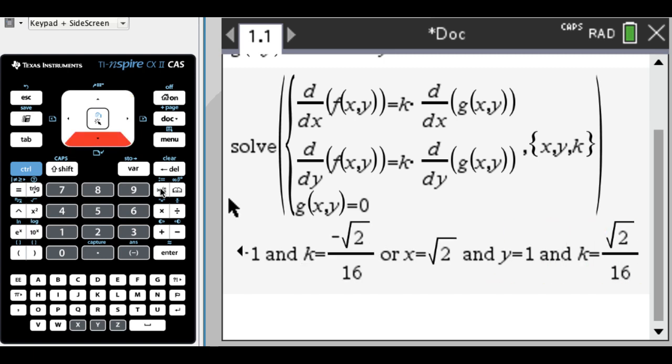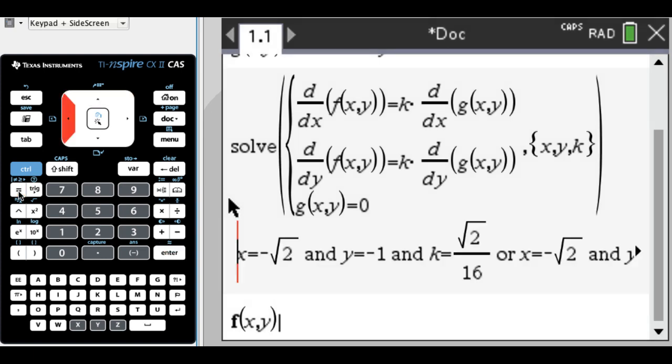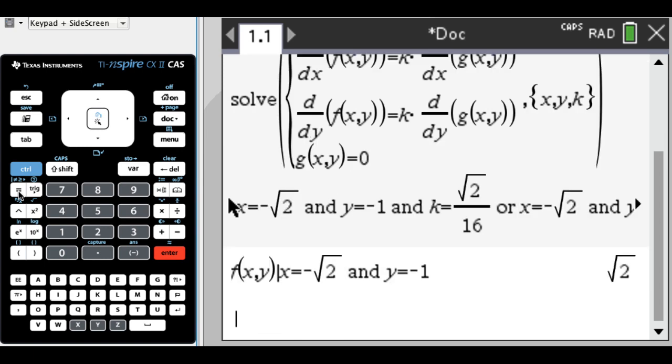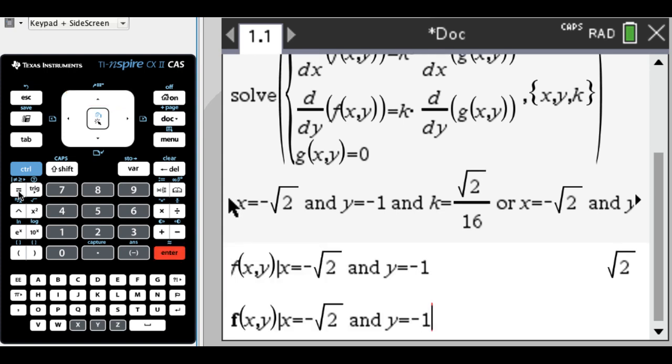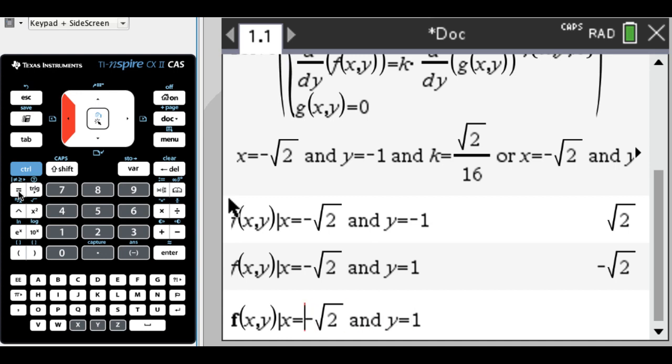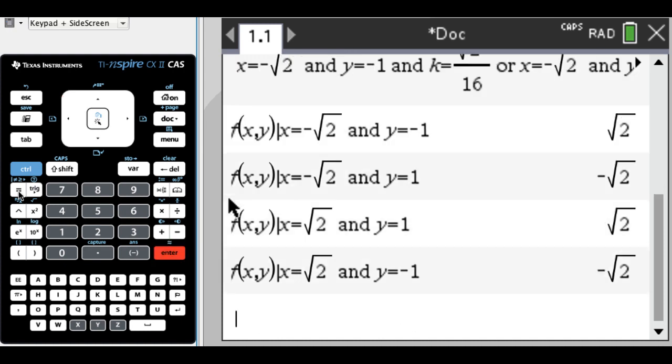So now what I want to do is I want to check the constraint function at those values, so I'm just going to type f of x comma y, I'm going to do control and then equals, and choose such that, and now I'm going to go up here and I'm holding shift as I press to the right, and I'm going to press enter to paste it down and evaluate. I get root 2. At this point it's up to you how you want to go about doing these, but you can see that the absolute maximum is root 2, the absolute minimum is negative root 2.